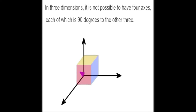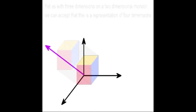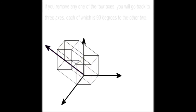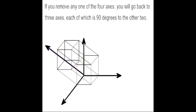Yet we accept this picture as a representation of three dimensions displayed on a two-dimensional monitor. In three dimensions, it is not possible to have four axes, each of which is 90 degrees to the other three. Yet as with three dimensions on a two-dimensional monitor, we can accept that this is a representation of four dimensions. If you remove any one of the four axes, you will go back to three axes, each of which is 90 degrees to the other two.